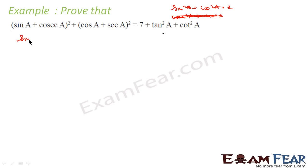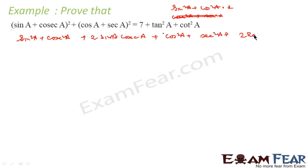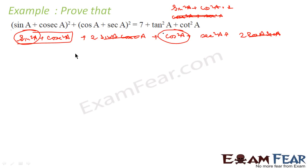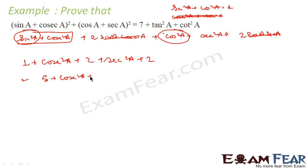Expanding, we get sin²A + cos²A + 2·sinA·cosA + cos²A + sec²A + 2·cosA·secA. Now sinA·cosA — wait, cosA·secA = 1, we know that. So sin²A + cos²A = 1. Taking this together, we get 1 + cosec²A + sec²A + 2 + 2, which gives 5 + cosec²A + sec²A.